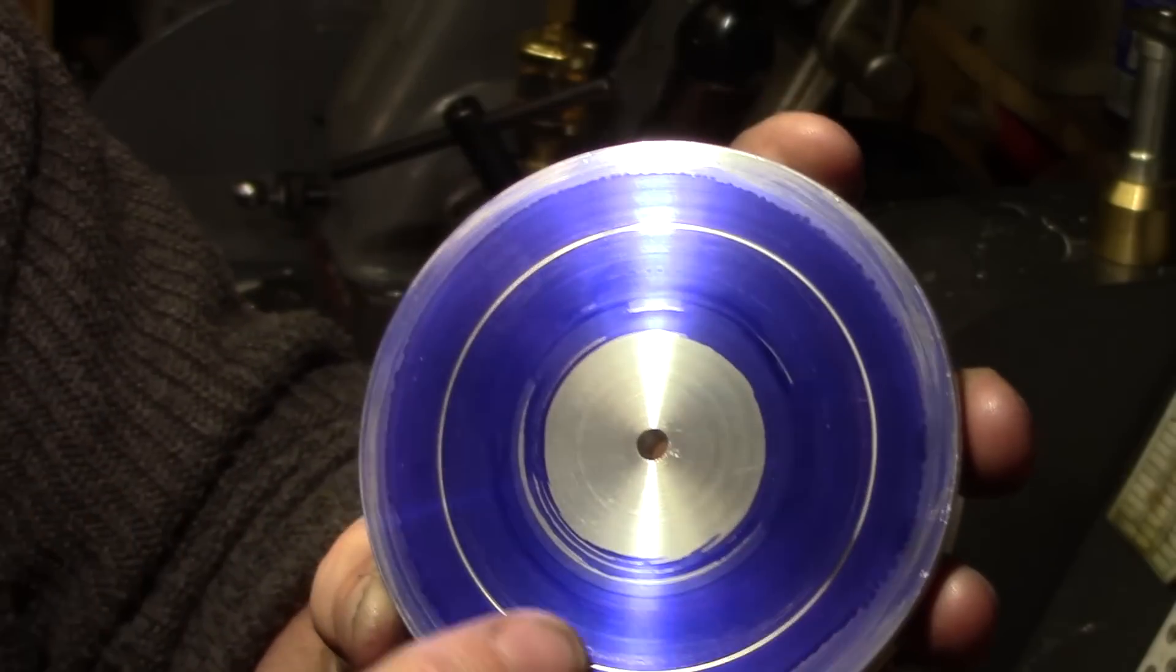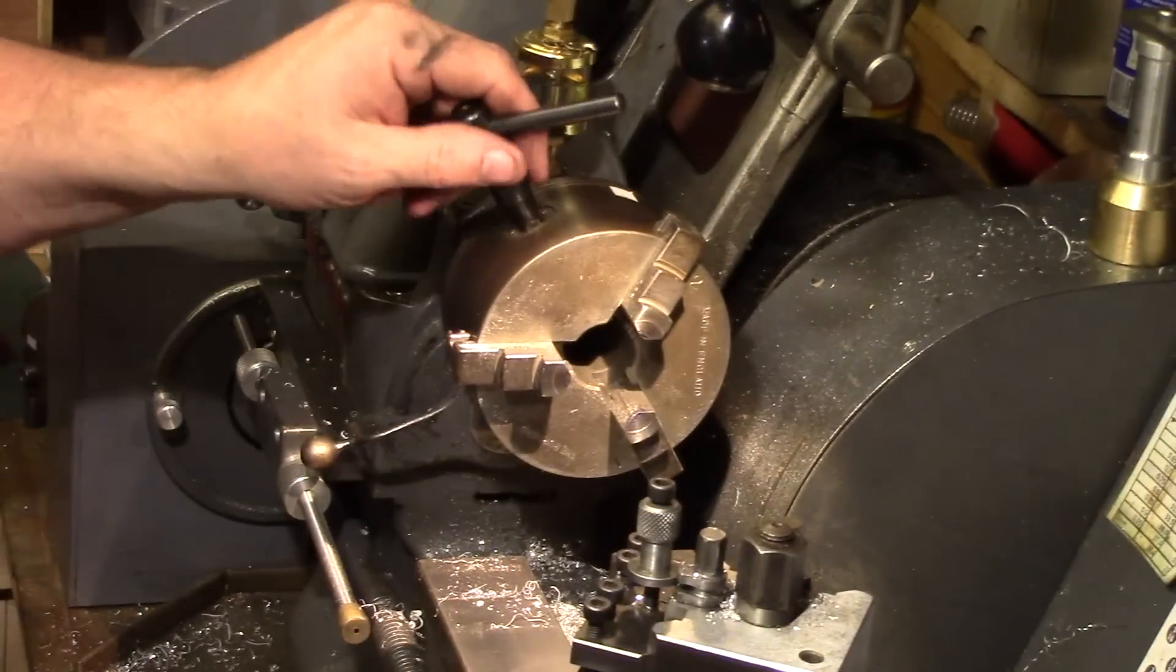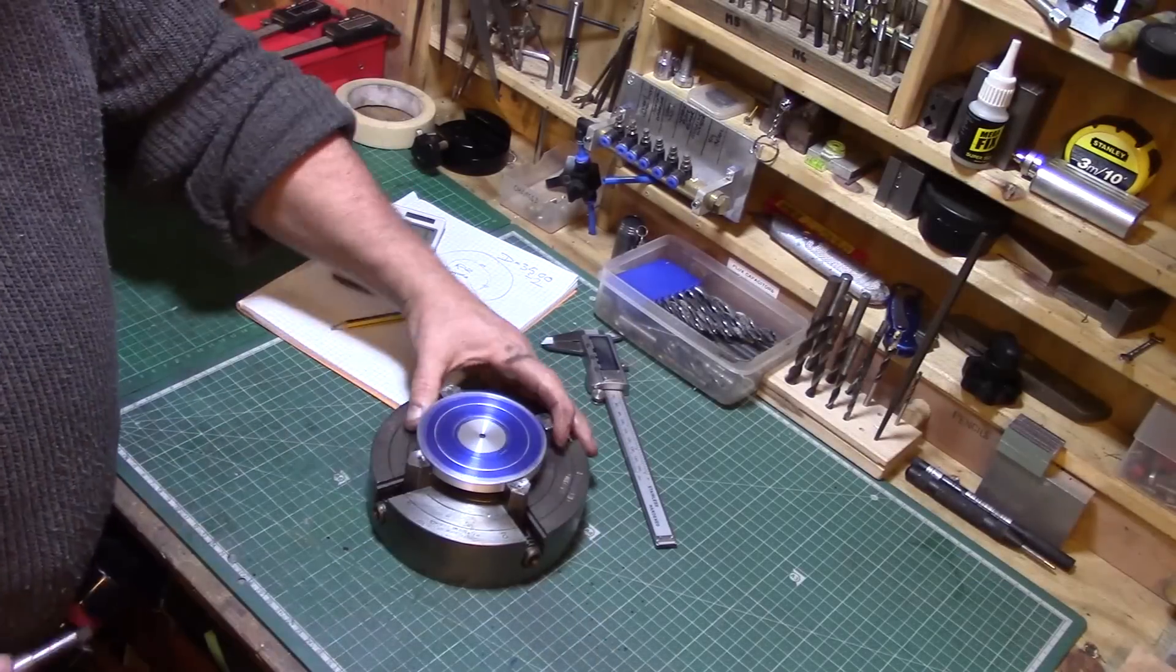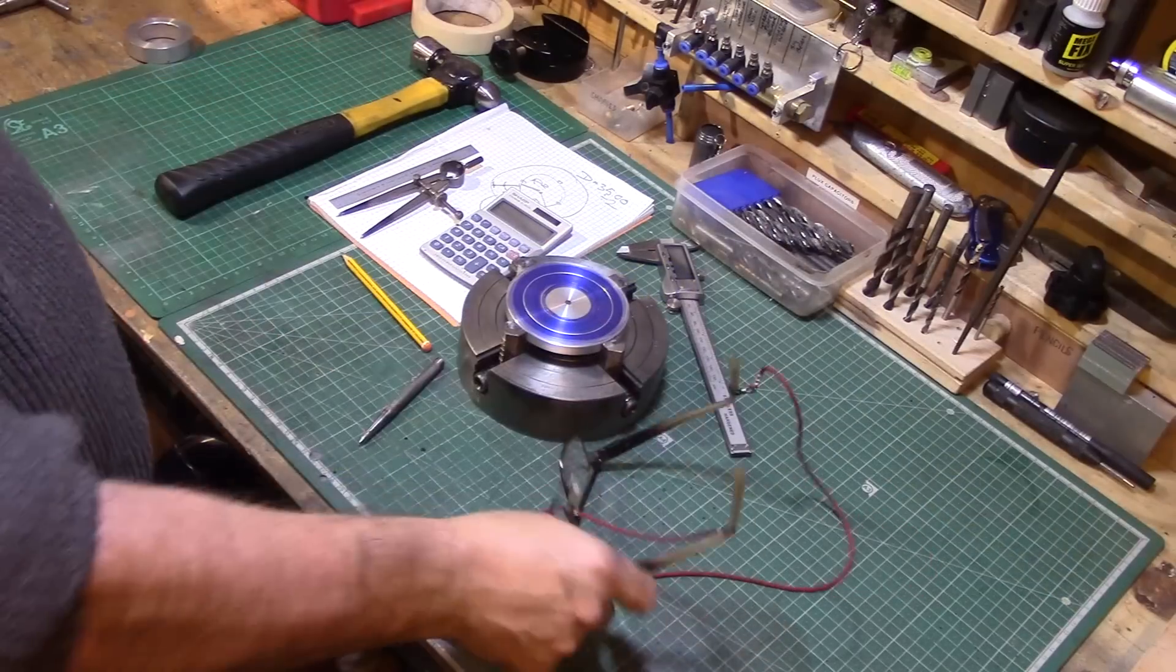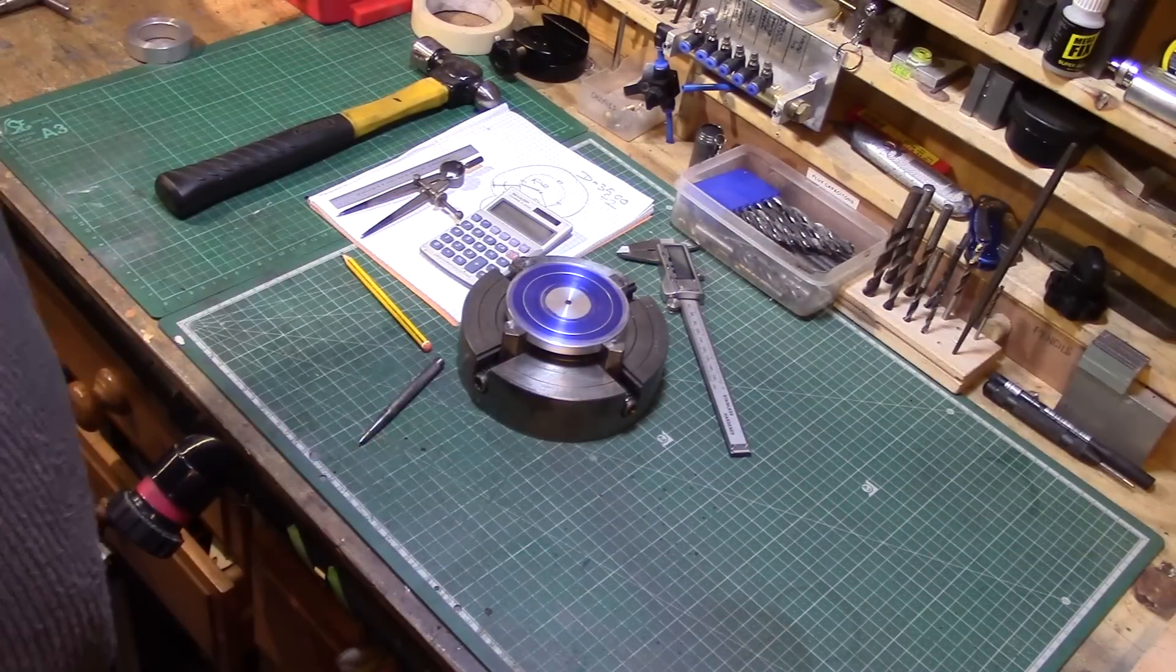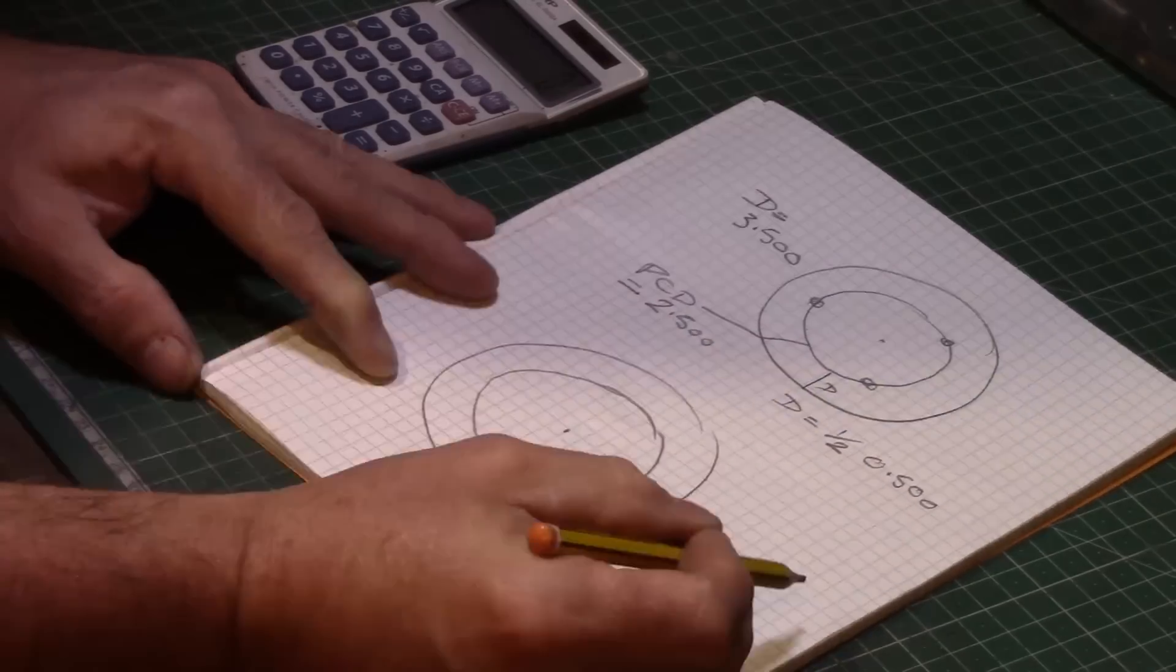There's a short spigot turned on the back of this disc, so I mounted it in my chuck to prevent it from being unstable against the flat surface.